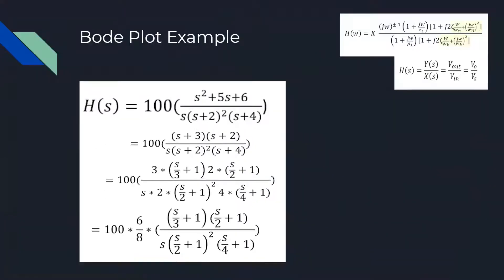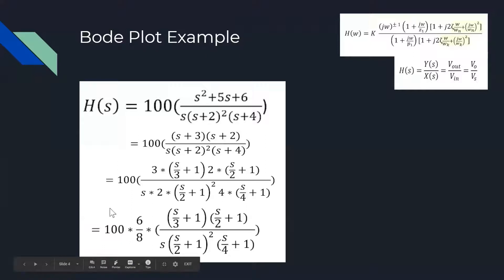For a Bode plot example today, this will be our example transfer function. We see that the 100 is our k factor, s squared plus 5s plus 6 is our zeros, and the bottom portion is our poles. We want to expand everything in the transfer function, so we expand the top portion to be (s+3)(s+2). Then we divide out each constant inside the parentheses added to s — dividing out the 3 to get (s/3 + 1), and doing the same for each one, until we get 100 times 6 divided by 8, which reduces to 75.